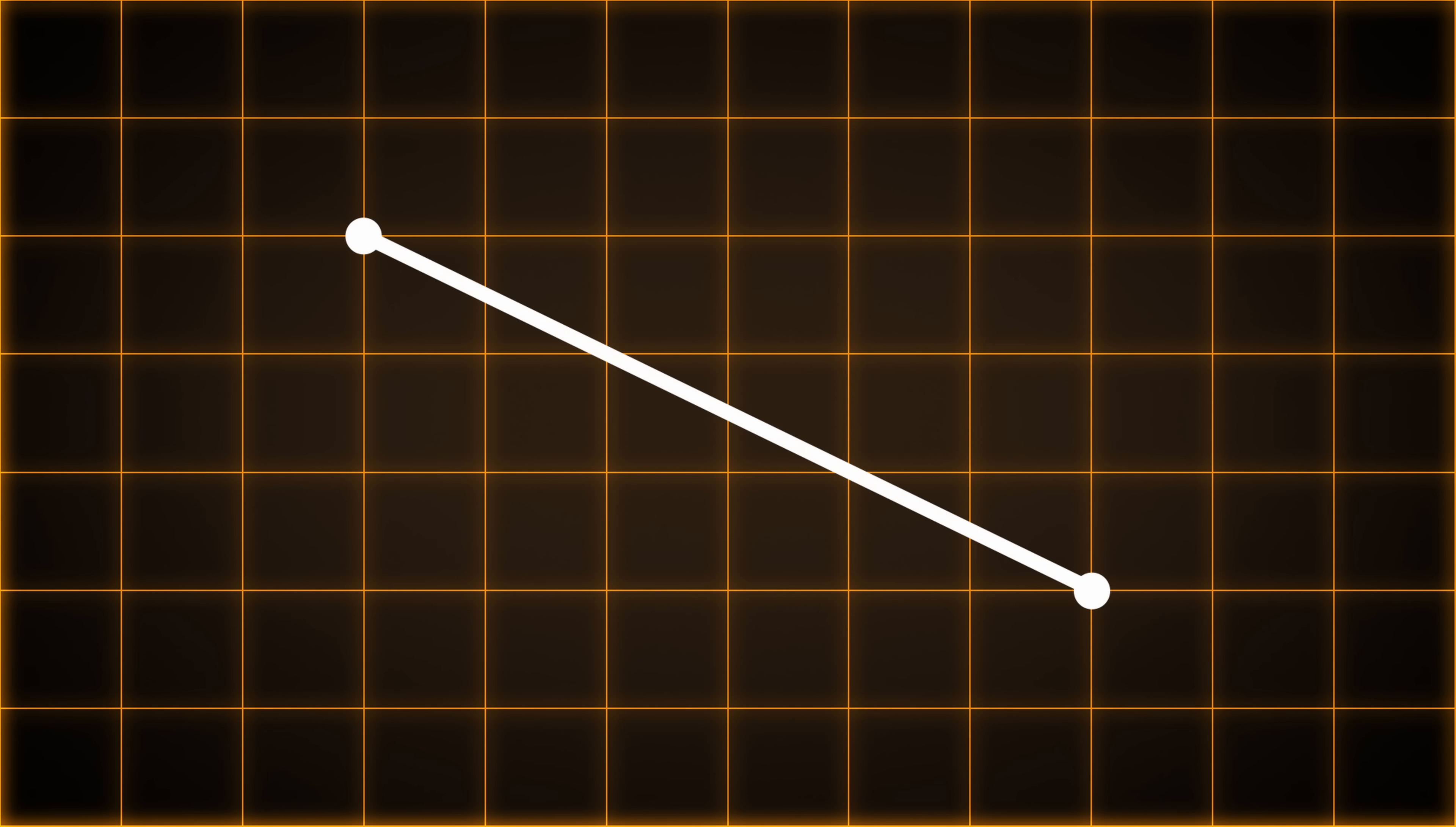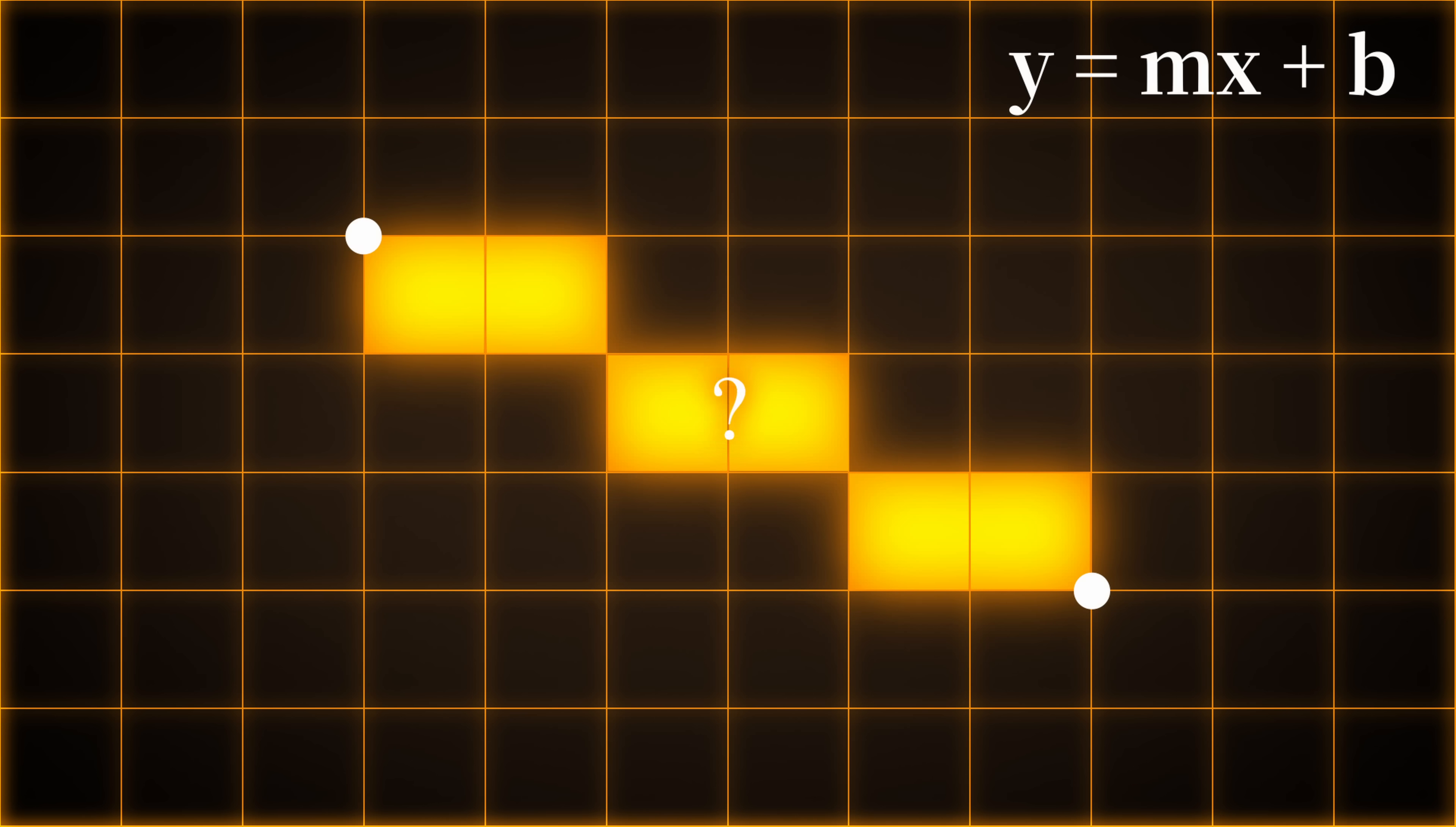The problem is simple. You want to draw a vector between two points, a vector that is represented by the equation y equals mx plus b. But you're not drawing on a piece of paper with an infinite number of points. You are drawing on a raster or a pixel map. How do you know which pixels will fit your line the best?